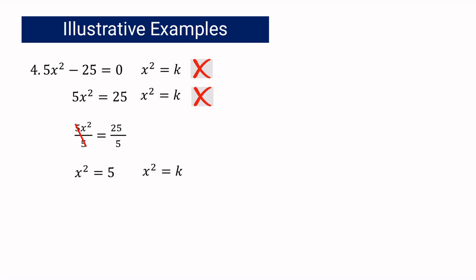Is it now written as x squared equals k? Yes, where k equals 5 and it is greater than 0. If k is greater than 0, x is equal to positive or negative square root of k. In this example, k is 5. Does 5 have a perfect square root? No, so the answer is x equals positive or negative square root of 5.